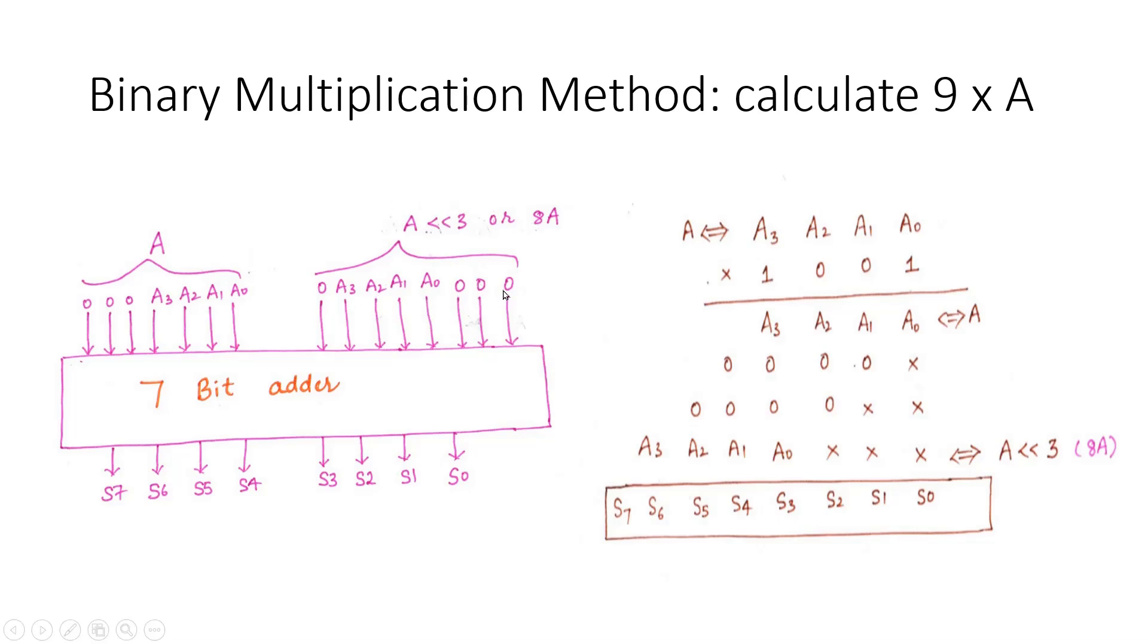Shifted version is nothing but I will add three zeros at the LSB site. Now if we add these two vectors, we will get the final answer, that is A multiplication. So as the two operands of this multiplication are four bits long, our final product should be 8 bits long.